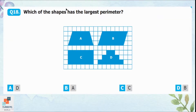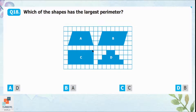Question 18: Which shape has the largest perimeter? The perimeter is the length of the boundary of a shape. Counting the sides of shape C gives an exact perimeter of 18 units. Shape C has all straight lines, making it straightforward to count.